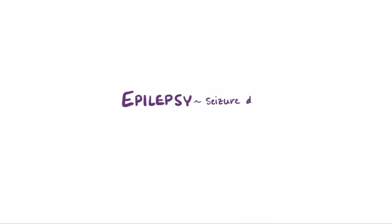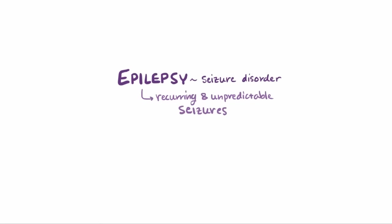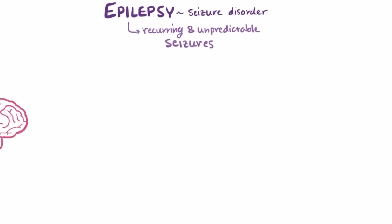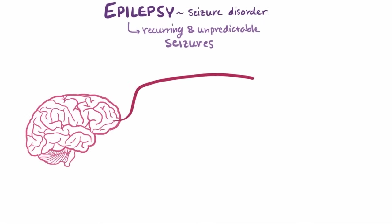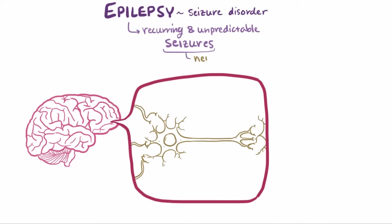Epilepsy means seizure disorder, so people with epilepsy have recurring and unpredictable seizures. A seizure is a period where cells in the brain, or neurons, are synchronously active, or active at the same time, when they're not supposed to be.